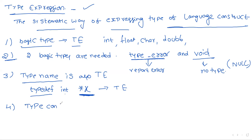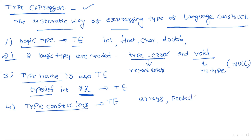Type constructors are also type expressions. The different types of type constructors — where we are constructing a data type — include: arrays, Cartesian products, struct, pointers, and functions. All these are type constructors, and all type constructors are also type expressions.